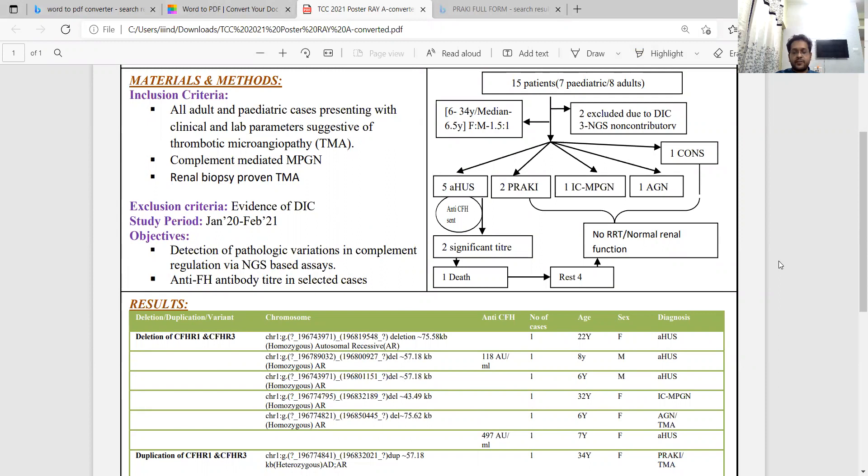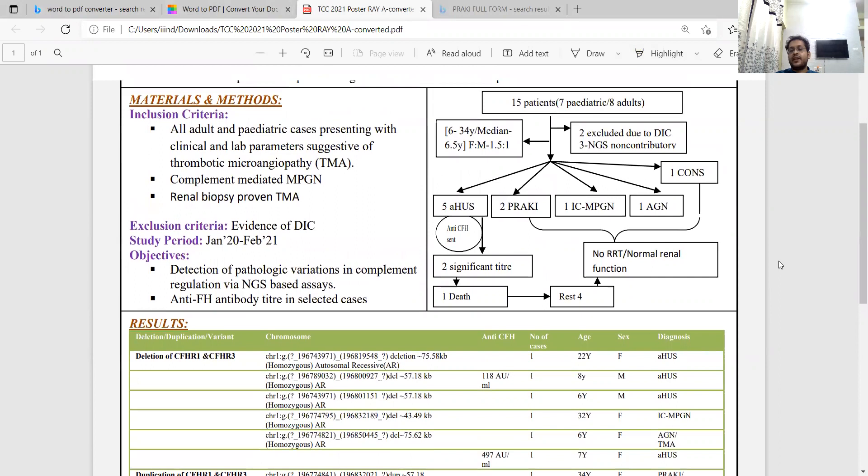We sent the gene panel for different pathologic variations of complement-regulated CFHR1, 3, and 5 especially, and also sent anti-factor H antibody titers in selected cases.